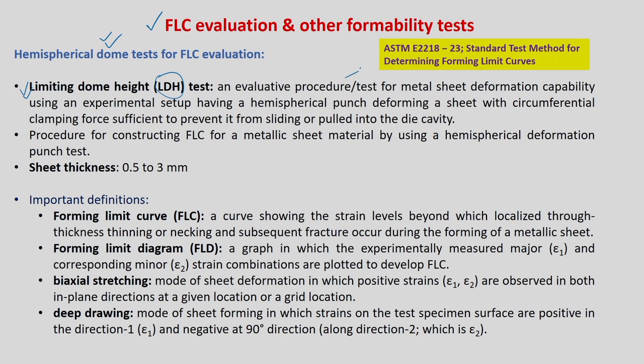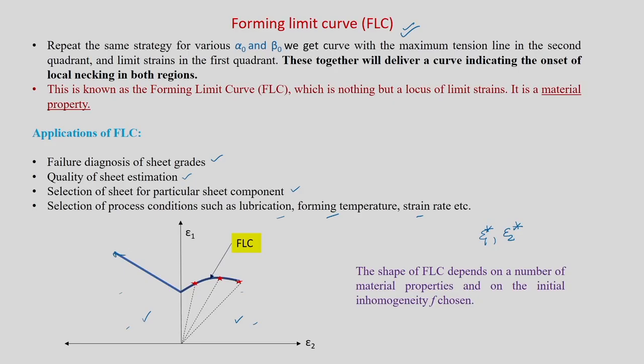It is an evaluation procedure for metal sheet deformation capability using an experimental setup having a hemispherical punch deforming a sheet with circumferential clamping force sufficient to prevent it from sliding or being pulled into the die cavity. You keep the sheet on the die, use a blank holder to hold it, and then the punch will come and push the sheet inside the die cavity until necking or fracture happens. Then you take the sheet out and measure epsilon 1 and epsilon 2 near the neck region — that becomes one point on the forming limit curve.